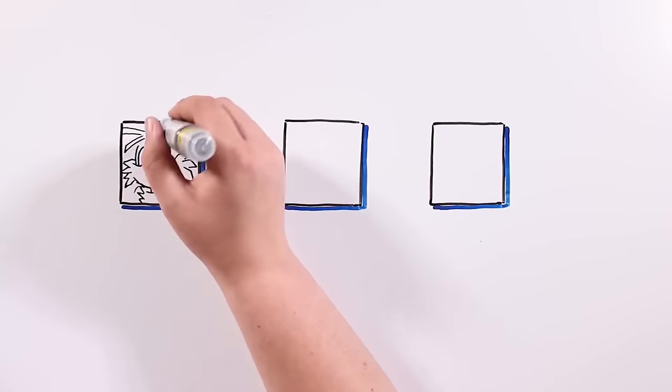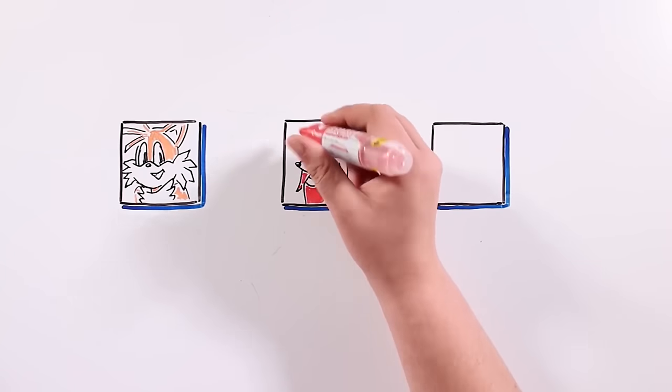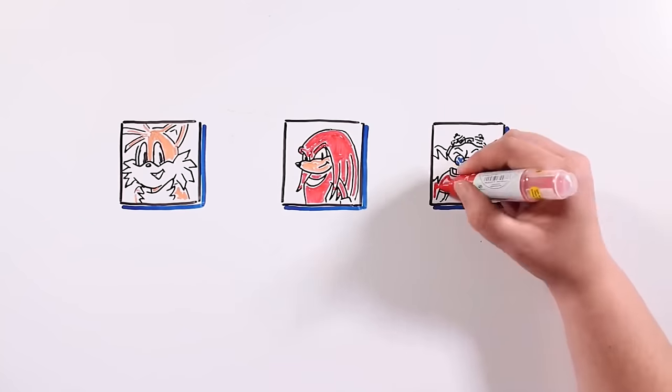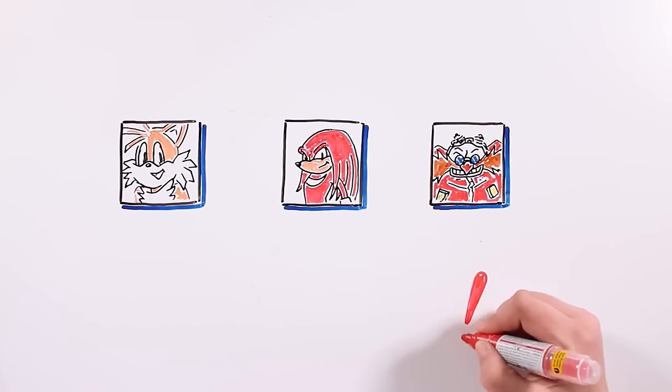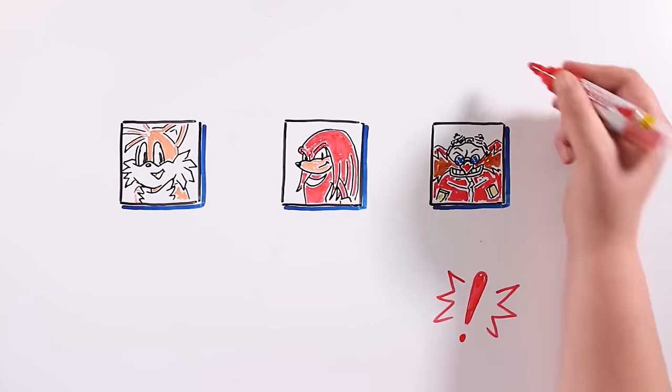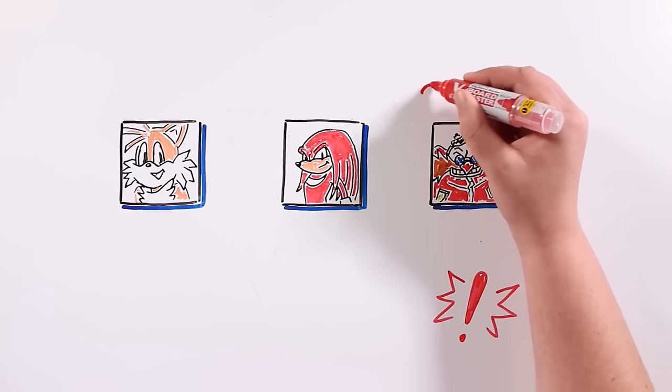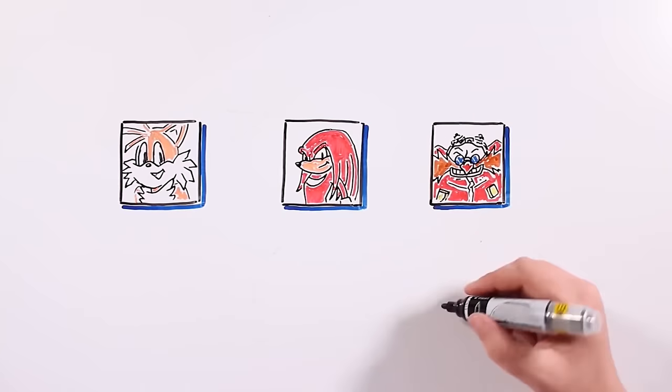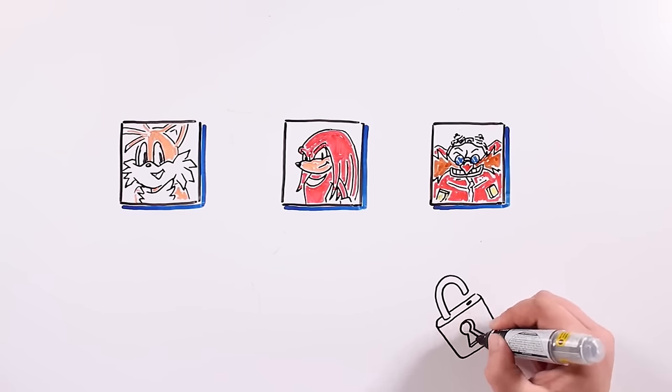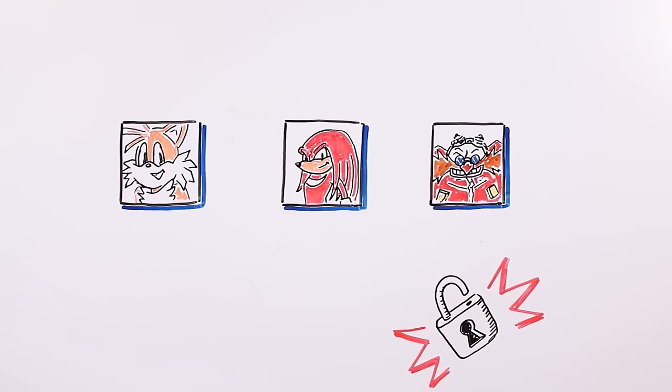When the screen to choose a character appeared, there were Tails, Knuckles and Dr. Robotnik. Now I knew for sure something was going on. I mean, how can you play with Robotnik in a classic Sonic game? At that point, I realized I was playing a hacked game. I kept on with it.